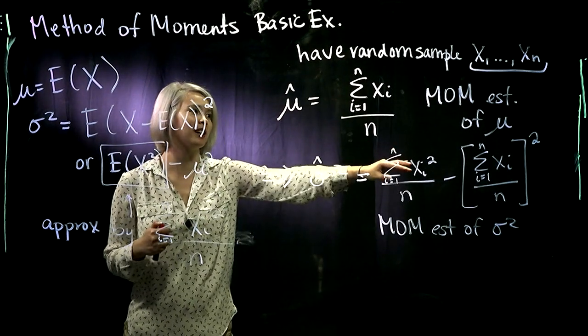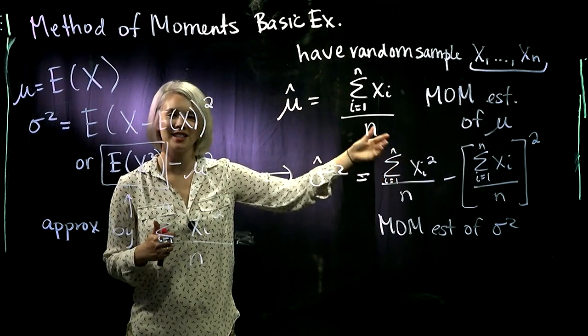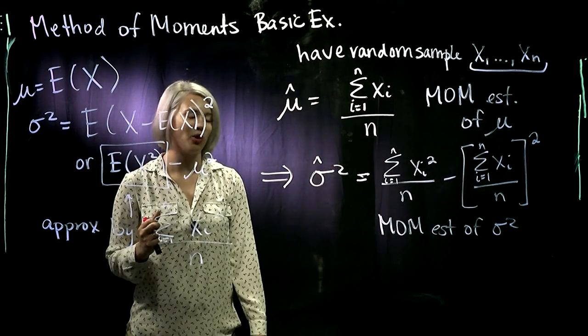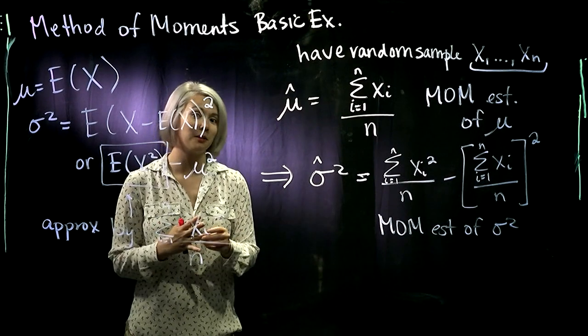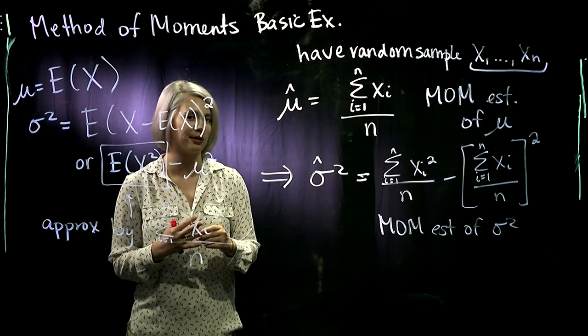So it's super easy because we're just taking sample means. We don't even need to know the PDF or PMF. But the problem is the method of moments estimators might not always fall in the parameter space.